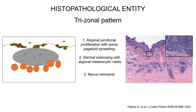In histopathology, this lesion is characterized by a tri-zonal pattern. This means there is a component located in the epidermis characterized by atypical junctional proliferation with some pagetoid spreading,